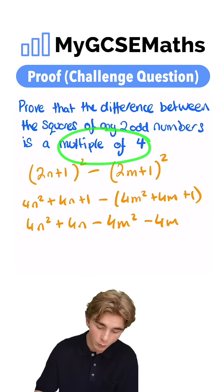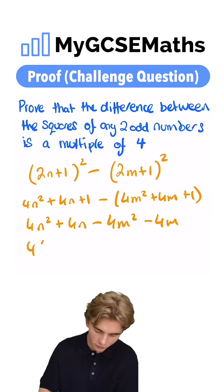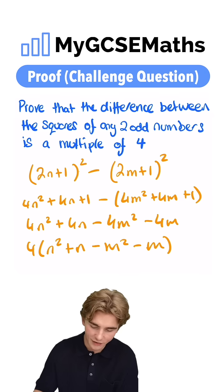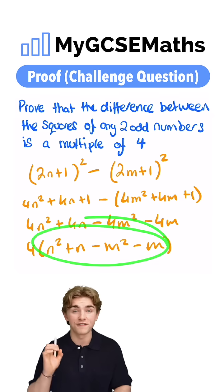How do we prove this is a multiple of 4? Then we're going to factorize it, pulling out a multiple of 4. We can write this as 4 times by n squared plus n, take m squared, take m, and that's going to be our answer. It's a multiple of 4 because we factored out 4.